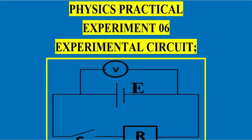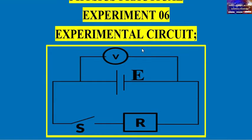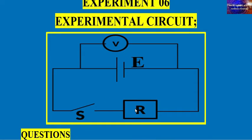We consider our experimental circuit. We have a voltmeter in parallel with the cell, and we have a switch. We have a resistance — this is a standard resistor, which can be a resistance box or standard resistor. We are going to see the change of resistance and record the value of potential difference.